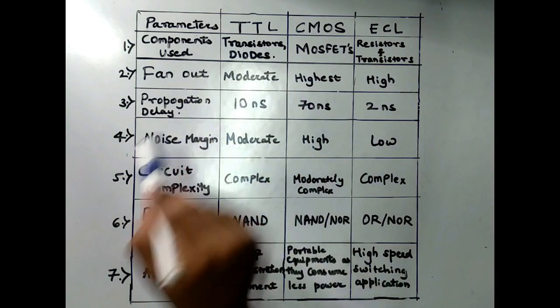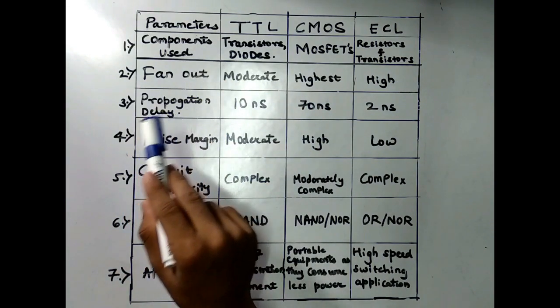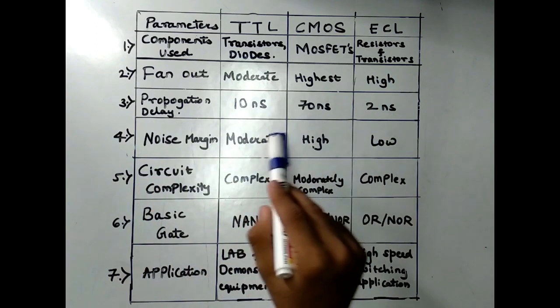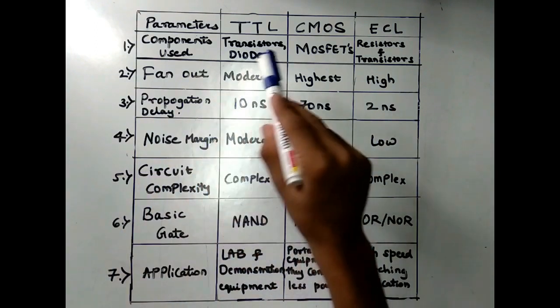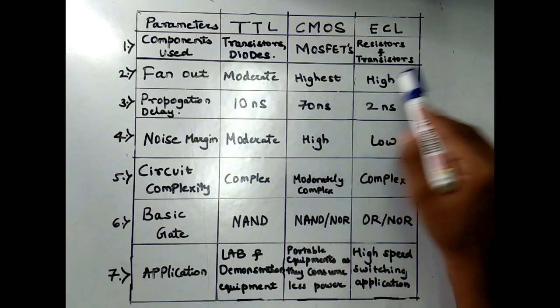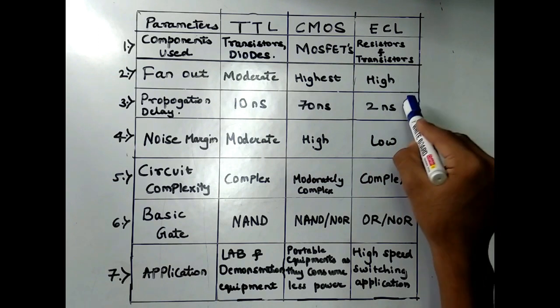The third parameter is Propagation Delay. It means the time required for the output voltage to reach the middle between the low and high logic levels. The Propagation Delay of TTL is 10 ns, the Propagation Delay of CMOS is 70 ns, and the Propagation Delay of ECL is 2 ns.